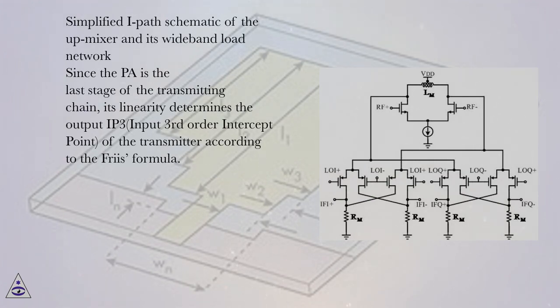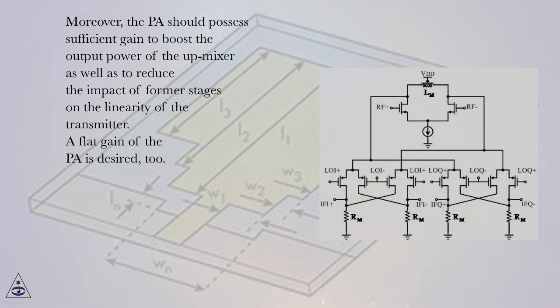Since the PA is the last stage of the transmitting chain, its linearity determines the output IP3 input third-order intercept point of the transmitter according to the Friis formula. Moreover, the PA should possess sufficient gain to boost the output power of the up-mixer as well as to reduce the impact of former stages on the linearity of the transmitter. A flat gain of the PA is desired, too.